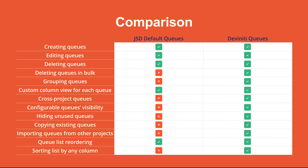Don't forget about queue list reordering. Generally, Jira administrators can set up the list view to make it more ergonomic, but what we added to that is the ability to sort the queue list for every user by any column displayed, like SLA or Priority. This improvement allows finding the needed issues much faster, which is very handy in case of having a large Service Desk project.